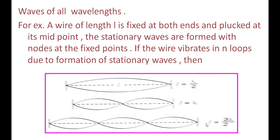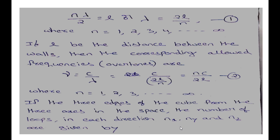Continuing: 4 nodes — 4λ/2, and so on. The general relation is L = Nλ/2, so λ = 2L/N, where N = 1, 2, 3, 4, ... to infinity.